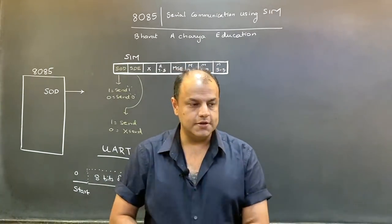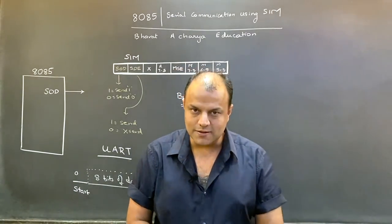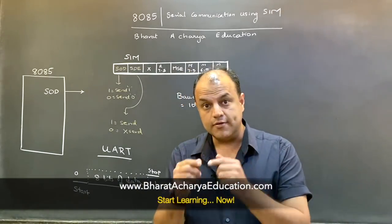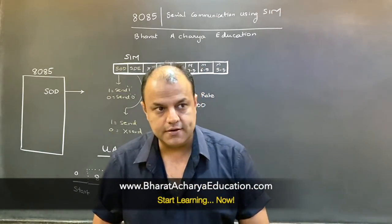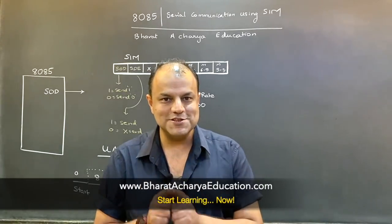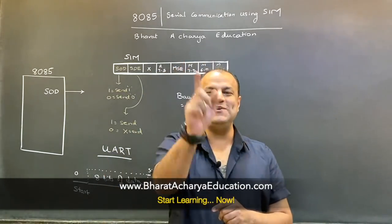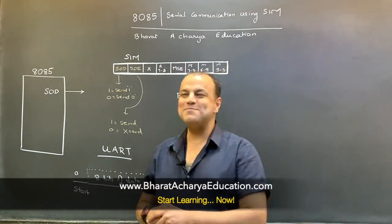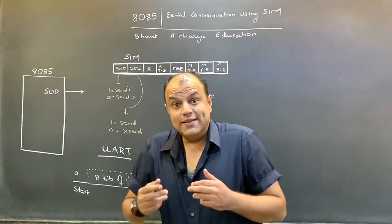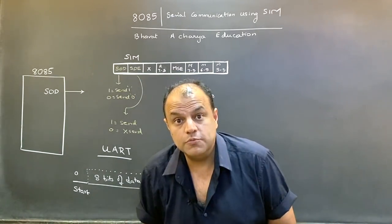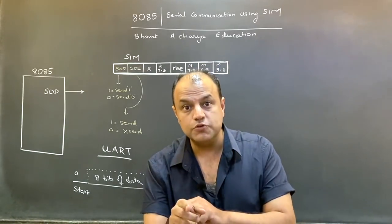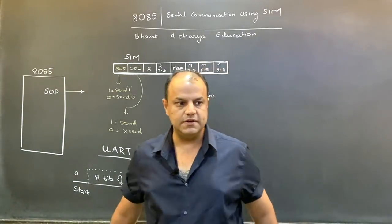If you know 8085, you need to know how to do serial communication using 8085. If you have learned the interrupts topic, this video will be right after interrupts in my video series. In the interrupts topic there are instructions SIM and RIM. We are going to be using the SIM instruction. Using the SIM instruction, we decide whether we want to perform serial communication and if yes, whether we want to send a 1 or a 0.